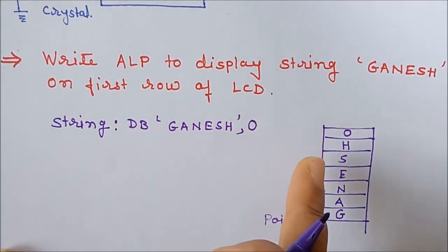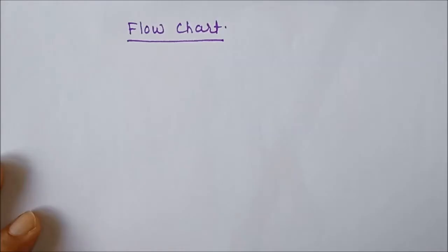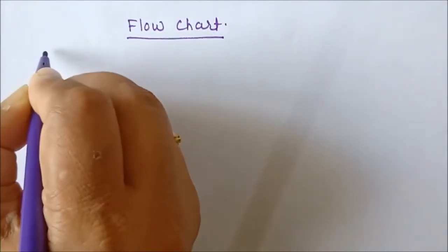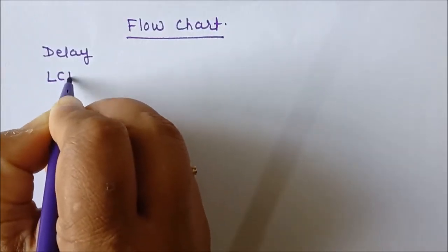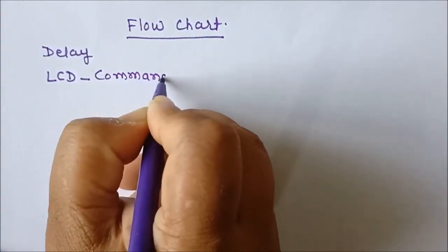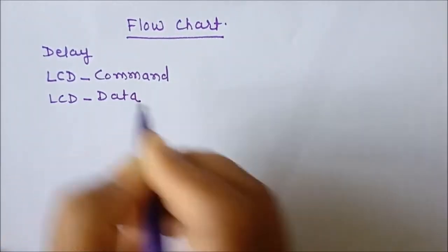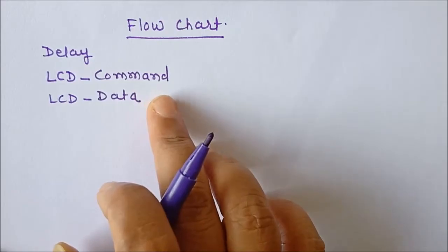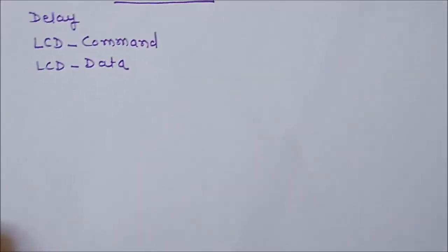Every time we read the ASCII value, if it is not zero we display it; otherwise it indicates end of the program. For writing the ALP program we will use three subroutine programs: one is a delay program, the second is the LCD command subroutine, and the third is the LCD data subroutine. The command subroutine writes a command in the command register, and the data subroutine writes data in the data register.